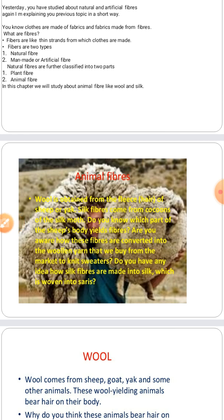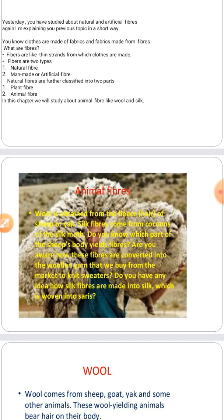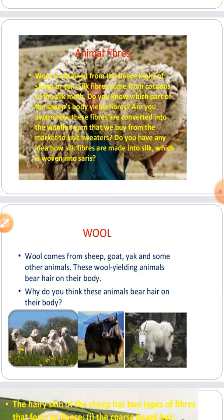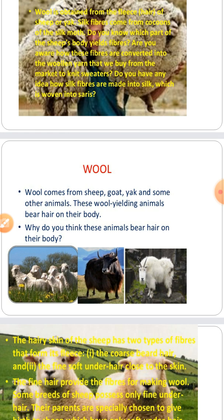In this chapter we studied animal fibers in detail. There are two kinds of animal fibers: wool and silk. Wool comes from sheep, goat, yak, and some other animals. These wool-yielding animals have hairs on their body that work like fibers, and these fibers are used in different ways.